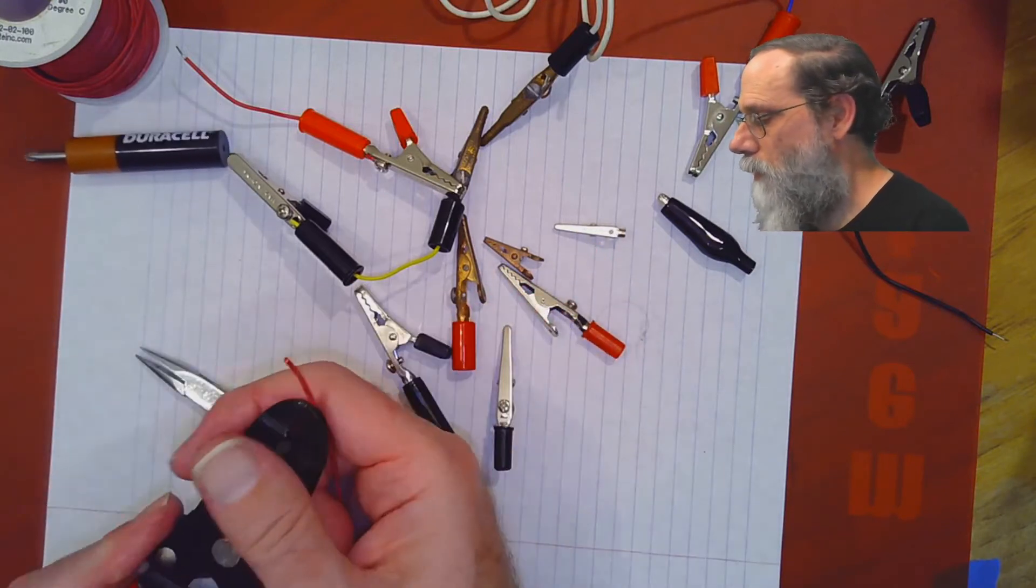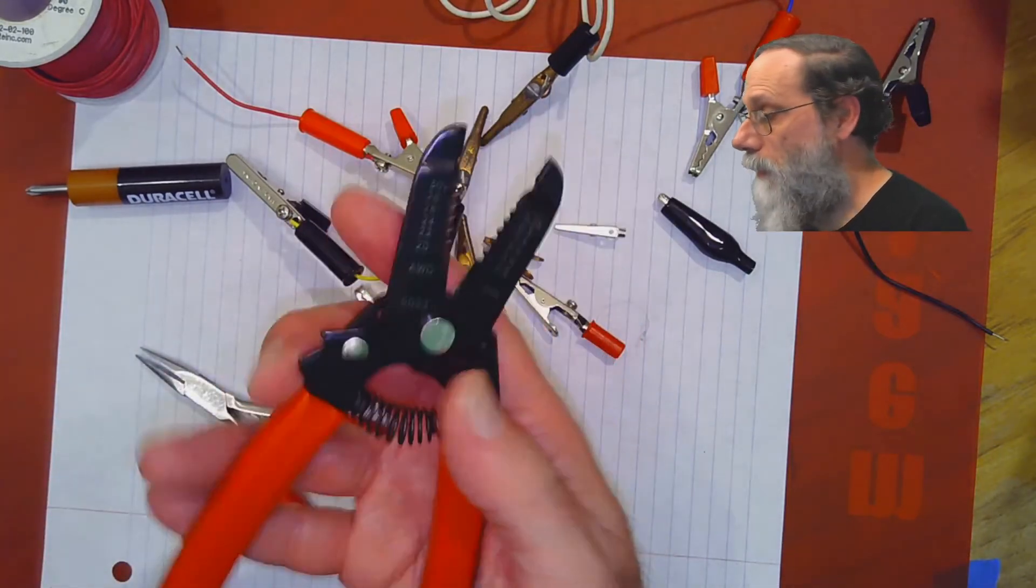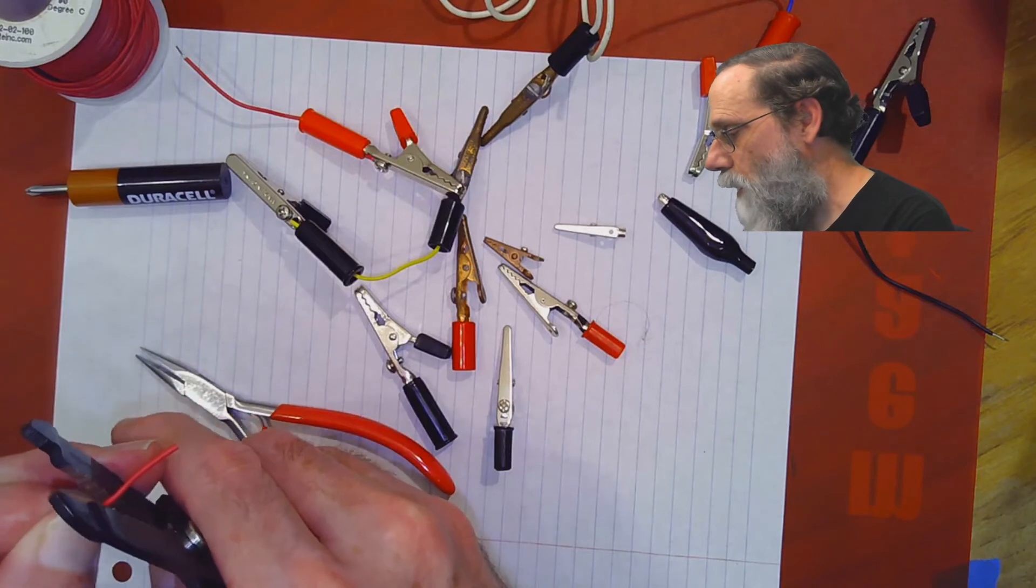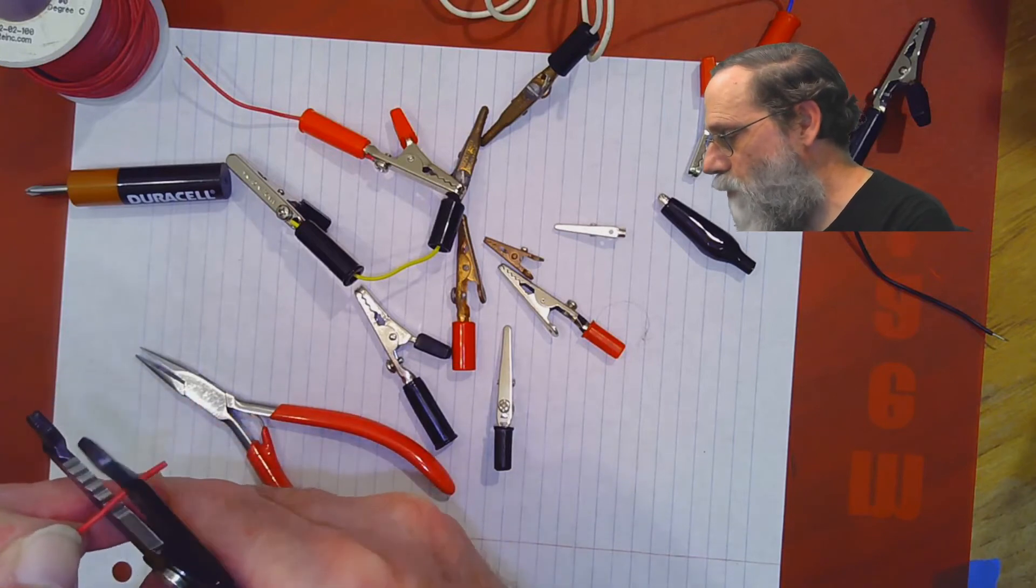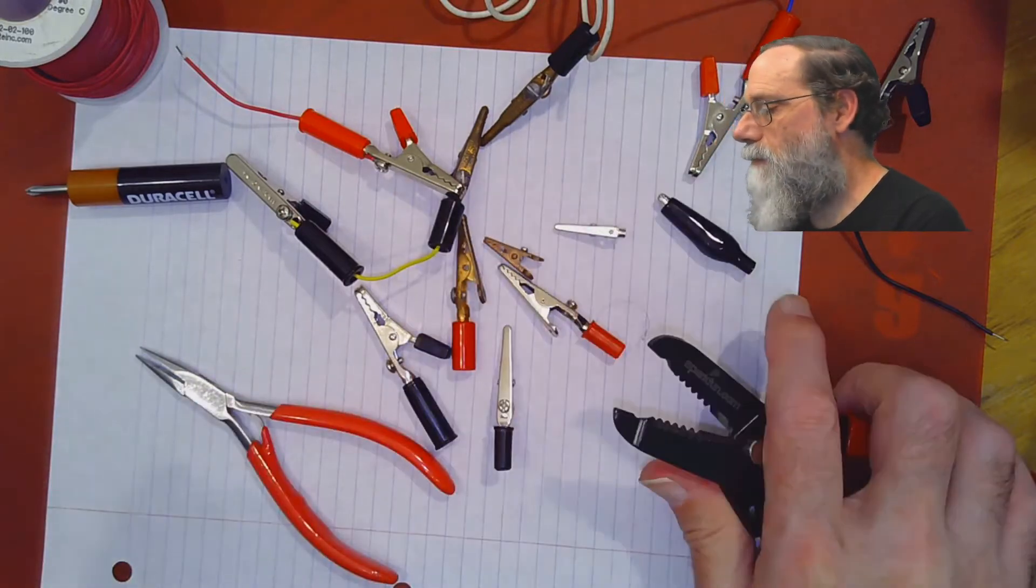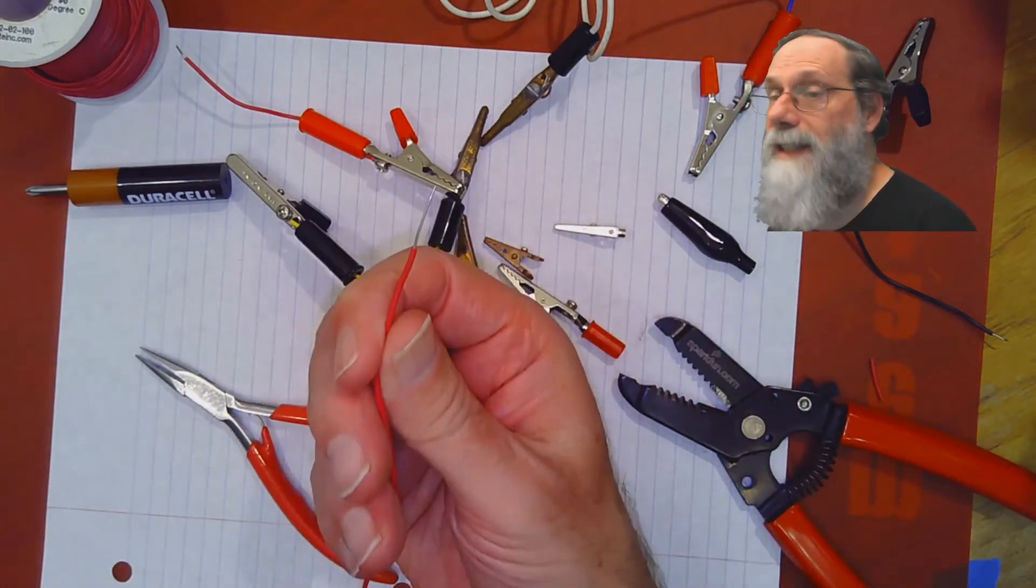So I'm going to strip this, and I'm going to strip this much more than we usually strip the wires in this class, because you need to wrap it around that screw, and that takes like a centimeter, 12 millimeters, half an inch, however you want to measure it. It doesn't have to be exact.